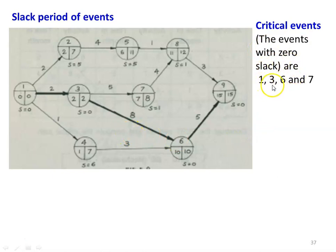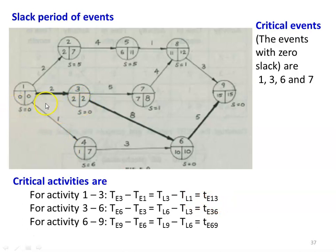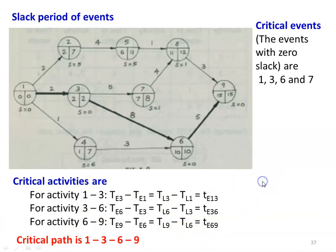The events with zero slack are 1, 3, 6, and 9 — these are the critical events, and the corresponding activities are critical activities. The critical activities are 1-3, 3-6, and 6-9. For a critical activity, the condition is: TE3 minus TE1 equals TL3 minus TL1 equals t(1,3), and similarly 3-6: TE6 minus TE3 equals TL6 minus TL3 equals t(3,6). The critical path is 1 → 3 → 6 → 9.